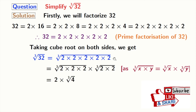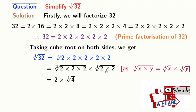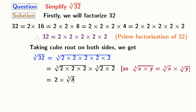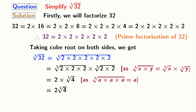From the first cube root we get 2, and from the second cube root we get cube root of 4. In the first cube root we have used the rule that cube root of a times a times a equals a, where a is 2. After simplification, we get 2 cube root of 4, and this is our final answer.